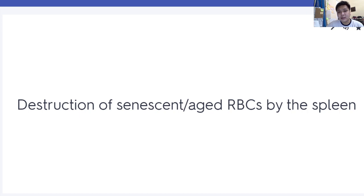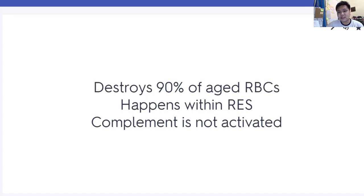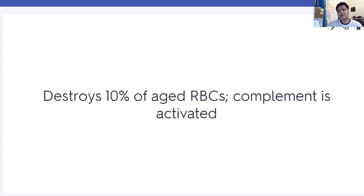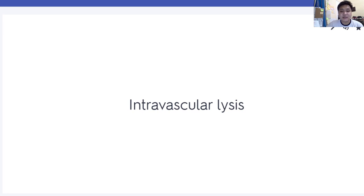Extravascular lysis destroys 90% of aged RBCs. This happens within the reticuloendothelial system, and complement is not activated. Intravascular lysis destroys 10% of aged RBCs. Complement is activated within the blood vessel — that's why it's called intravascular. Ferritin is the major storage form of iron.